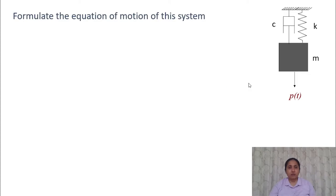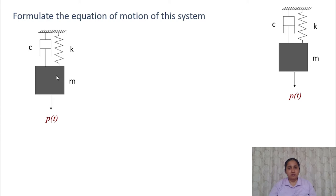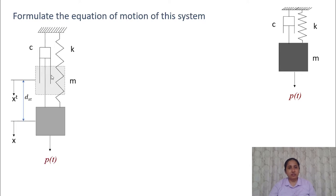Let's move on to example problems. We have a system with a mass, a damper, and a spring, with a dynamic force p(t) acting on the mass. Because of the self-weight, the system will have a static displacement. The displaced configuration under its own weight gives dst as the static displacement, x as the displacement relative to the static equilibrium position, and xt as the total displacement, so xt = x + dst.